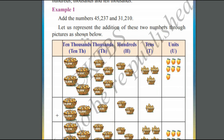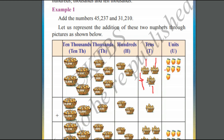First, let us represent 45,237. In the units place, we have 7 mangoes. In the tens place, we have got 30 mangoes, where each basket contains 10 mangoes — 10 plus 10 plus 10 is 30 mangoes.